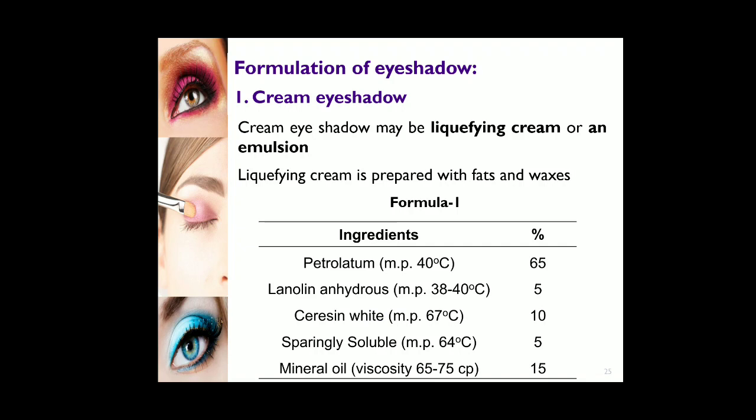For the formulation of eye shadows, the first type is cream eye shadow, which may be a liquefying cream or an emulsion. An emulsion requires an oil phase, an aqueous phase, and an emulsifying agent. The oily phase ingredients include petrolatum and lanolin, which are used to give consistency.